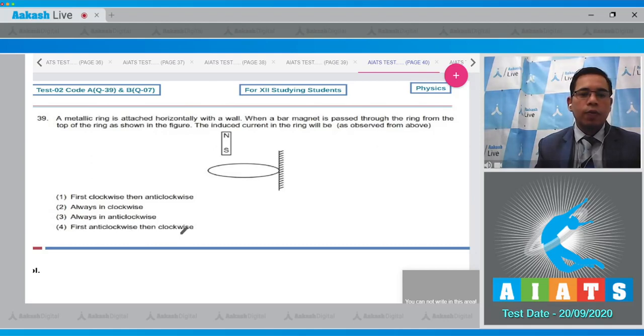From Lenz's law, we can see that when the S pole is nearer, it will behave like an S pole, and when it is passing through the coil and the N pole is nearer, it will behave like an N pole. That means initially there will be clockwise current and after that there will be anticlockwise current. Hence, option 1 will be the correct answer.